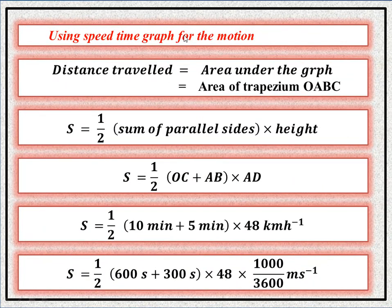Using the speed-time graph, distance travelled is equal to the area under the graph. This equals the area of trapezium OABC. The formula for the area of a trapezium is: one-half times the sum of the parallel sides times the height.